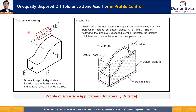The first modifying symbol used in profile control is the encircled U, or unequally disposed tolerance zone. When profile control is used without the U modifying symbol in the feature control frame, it's a default condition — meaning the profile tolerance zone is equally distributed on both sides of the true profile. The true profile is defined by basic dimensions with respect to datums, in this case datum A, B, and C.